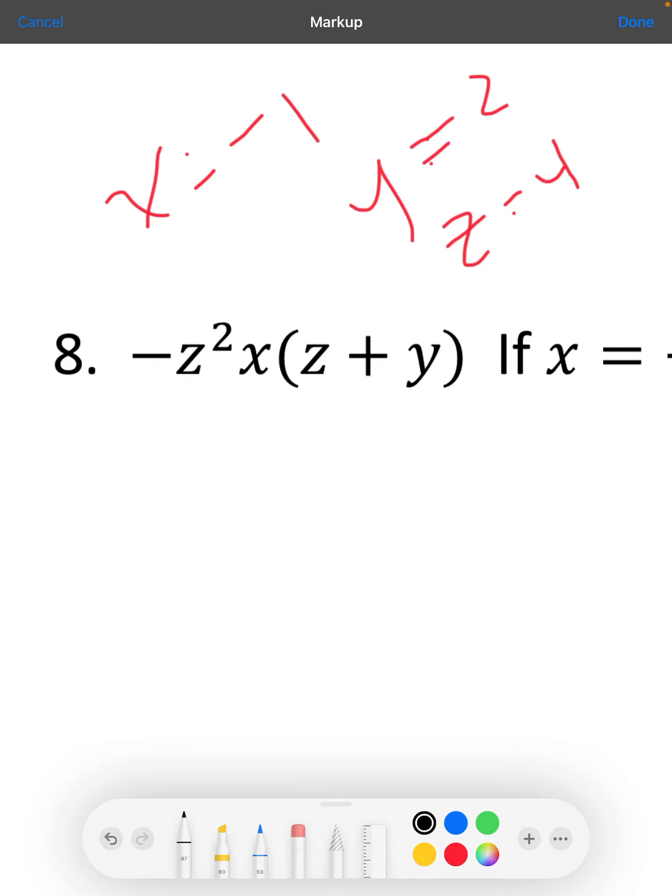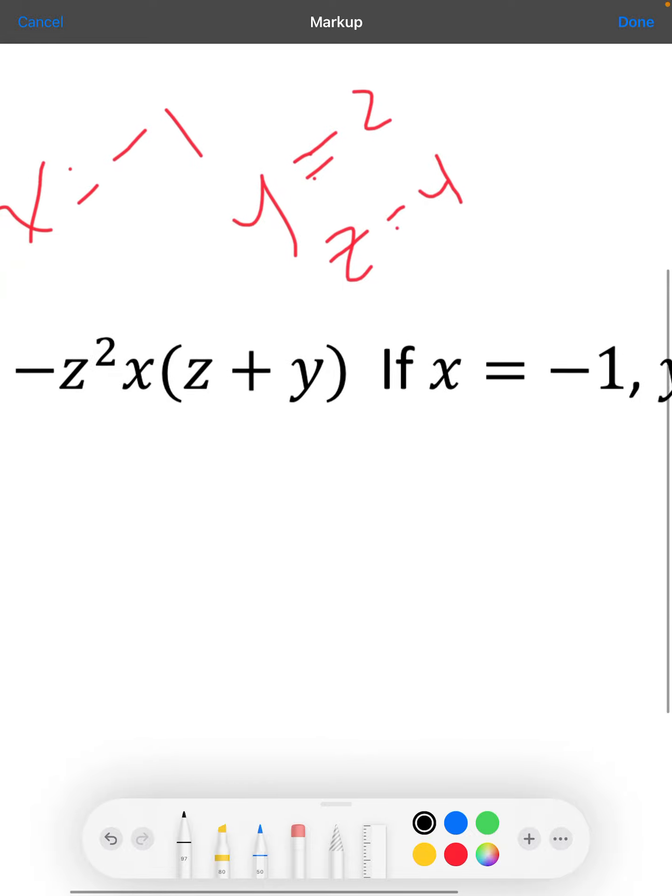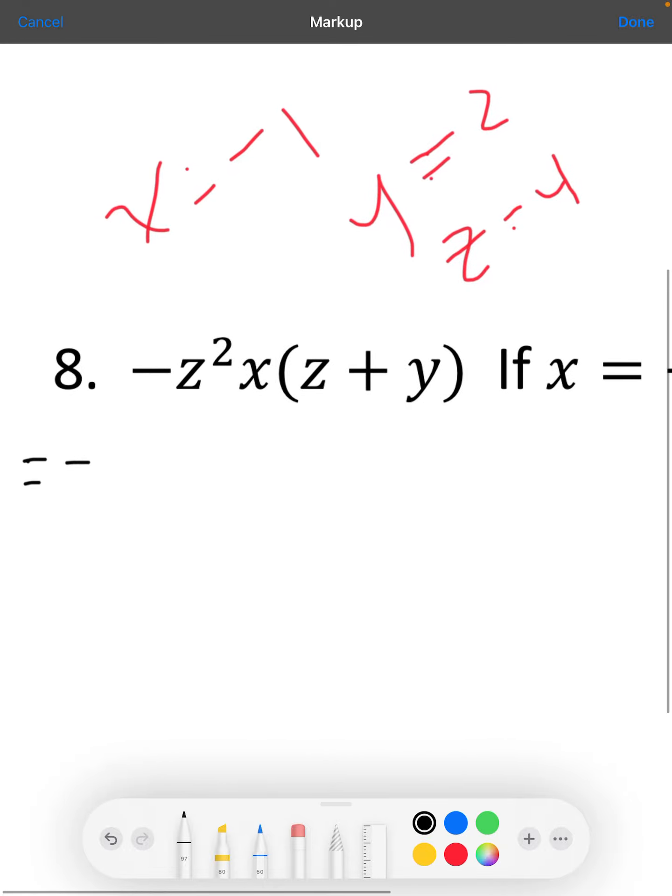The negative out front is just going to stay out front because it's not being squared—the z is what's being squared, not the negative. When I plug 4 in for z, I'm going to substitute a 4 for z and drop down my squared.